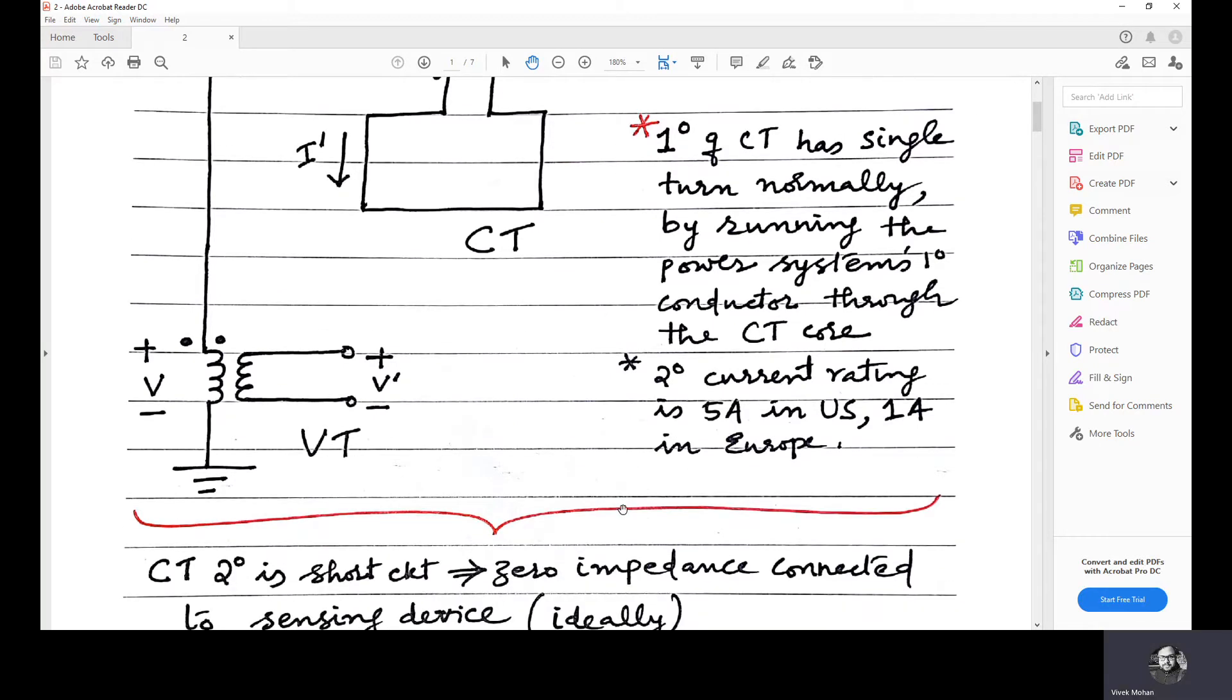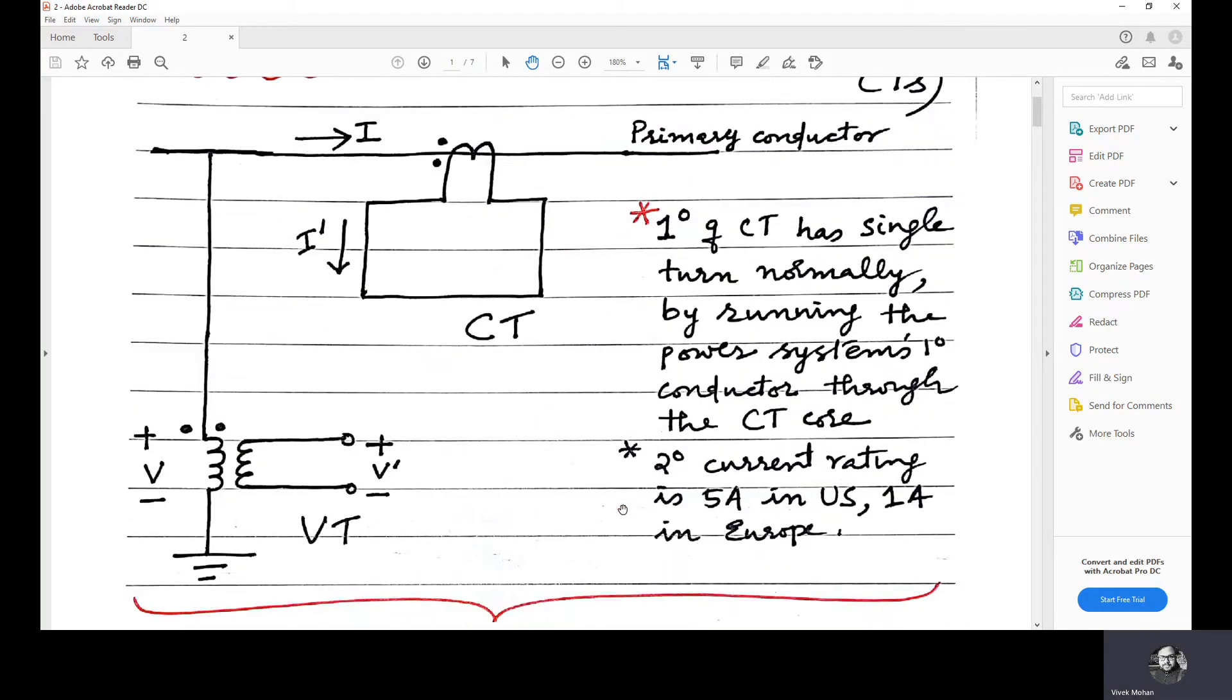Now, let's see some differences between CTs and VTs, the features of CTs and VTs. Regarding the core, the core is usually built up with lamination of silicon steel in current transformer. And in a potential transformer, it is made up of high-quality steel operating at low flux densities.